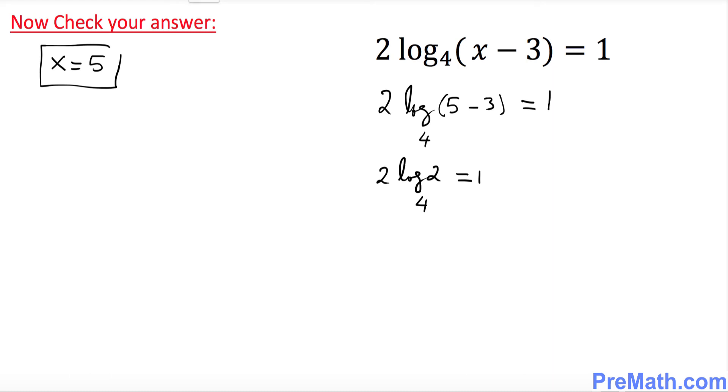Now I want you to isolate this part over here. So that means I want you to divide both sides by 2 on this side by 2 and 2. So this 2 and 2 is gone. So log of 2 with a base 4 equals to 1 over 2.